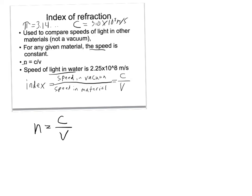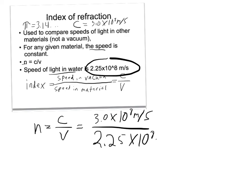That's just comparing the speed of light in a given material to the one in a vacuum. So n equals 3.0 times 10 to the 8th meters per second divided by the speed of light in water, which I've written here, 2.25 times 10 to the 8th meters per second. If you do that, the index of refraction of water is 1.33. An index of refraction is a unitless number. It's just 1.33.